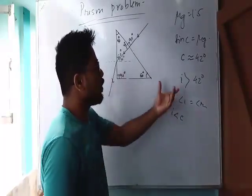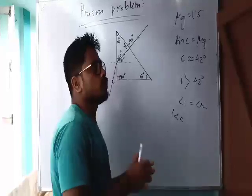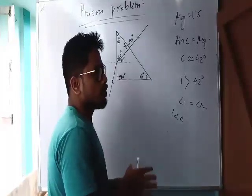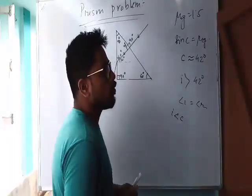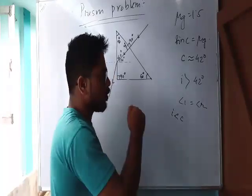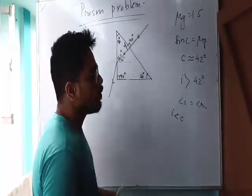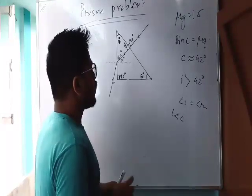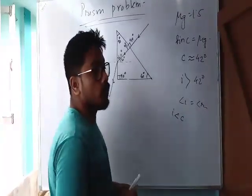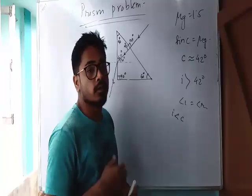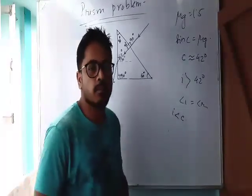We have to look at the refracted ray and the 90-degree angle formed with the normal. The critical angle of incidence and the internal reflection of this concept is the principle of the prism problem.